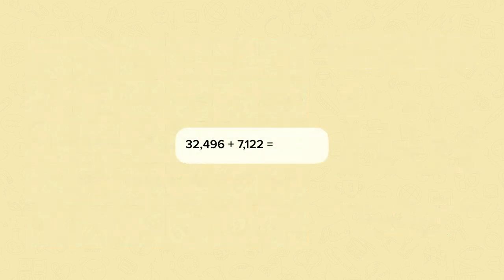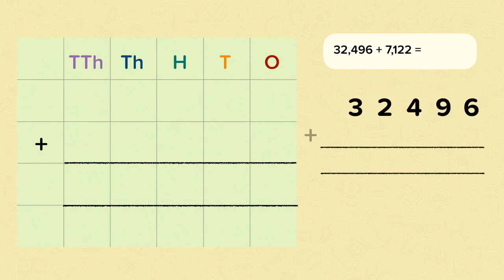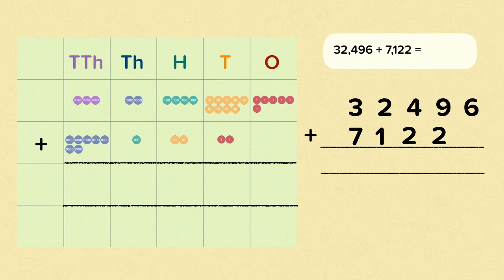Now let's have a look at another calculation. This time 32,496 adds 7,122. Now some people might set it up like this. However, this is something that you need to be very careful about. Because here the numbers haven't been set up in the right columns. The seven in 7,122 should be in the thousands column, but here it's in the ten thousands column. So before we can solve this calculation, we need to push the digits back into the correct place.